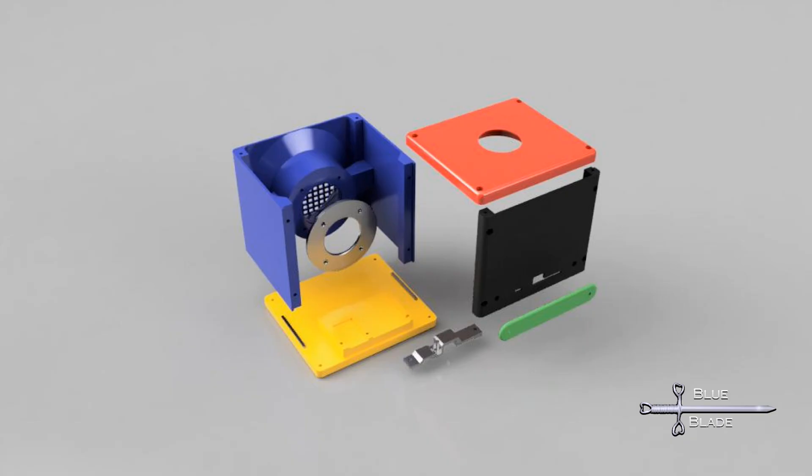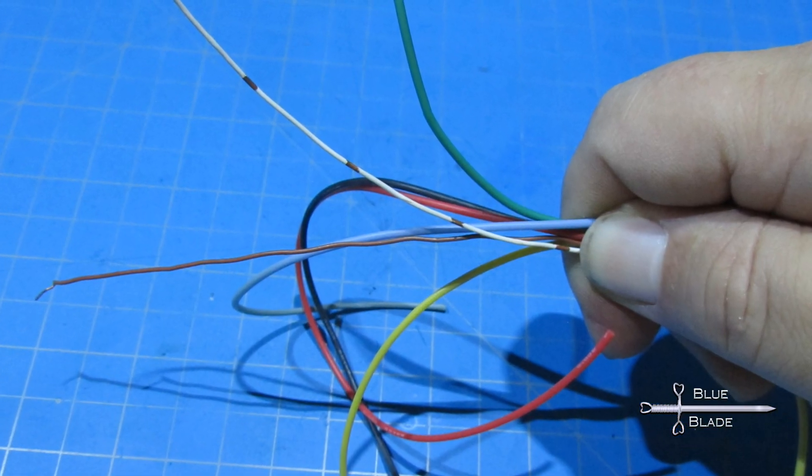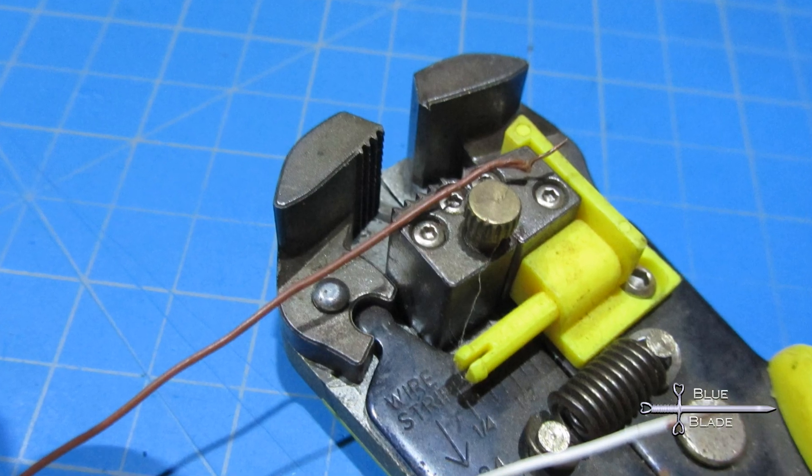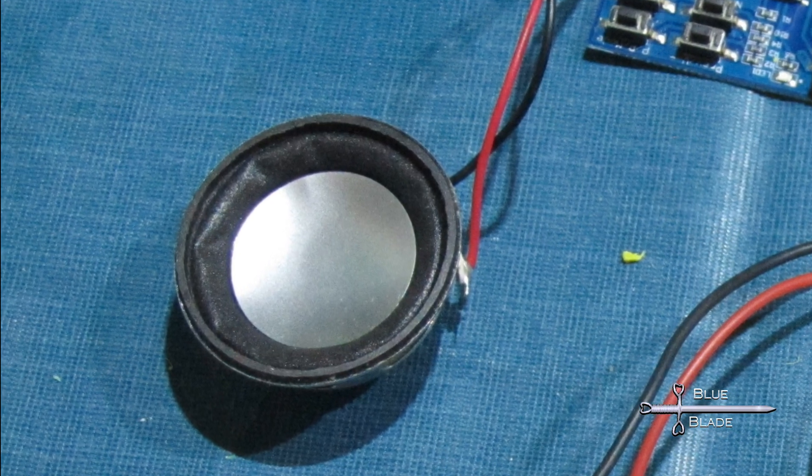To assemble, after printing all the parts for the housing, cut six wires to about six inches in length and strip the ends. If your speaker did not come with wires attached, cut two more and solder them onto the speaker.